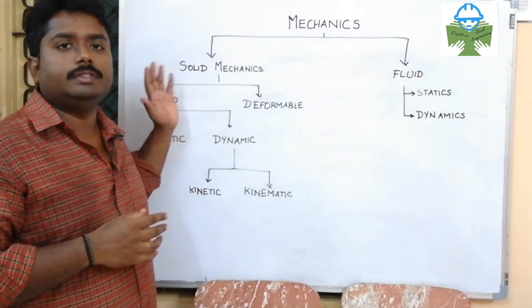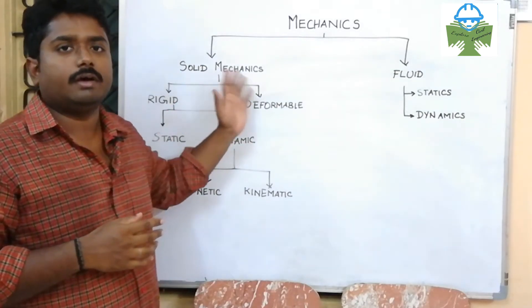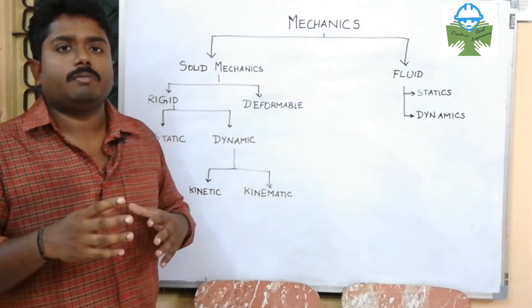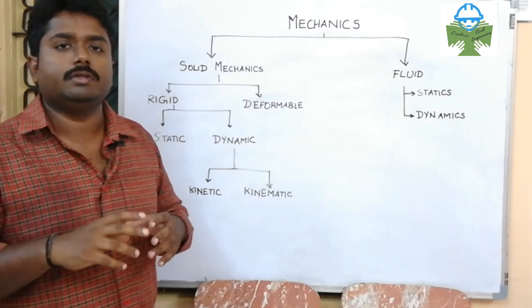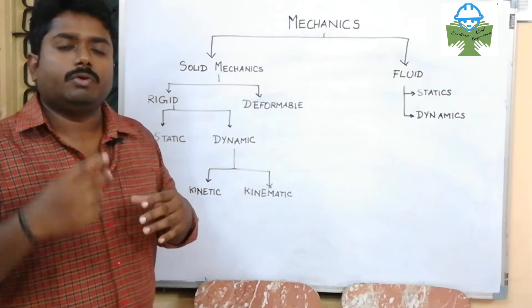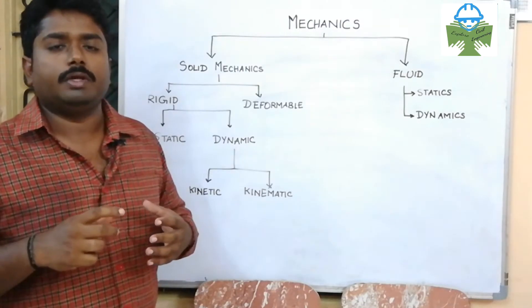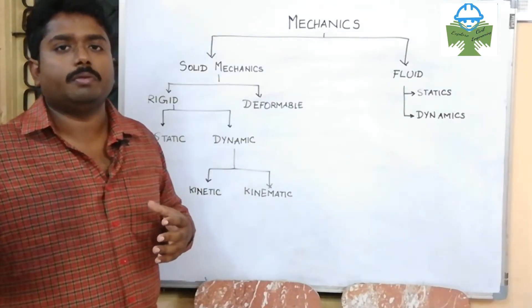Solid mechanics includes rigid body mechanics and deformable body mechanics. A deformable body is made of a standard material — one object which is deformable. Deformable body mechanics deals with stress, strain, etc.